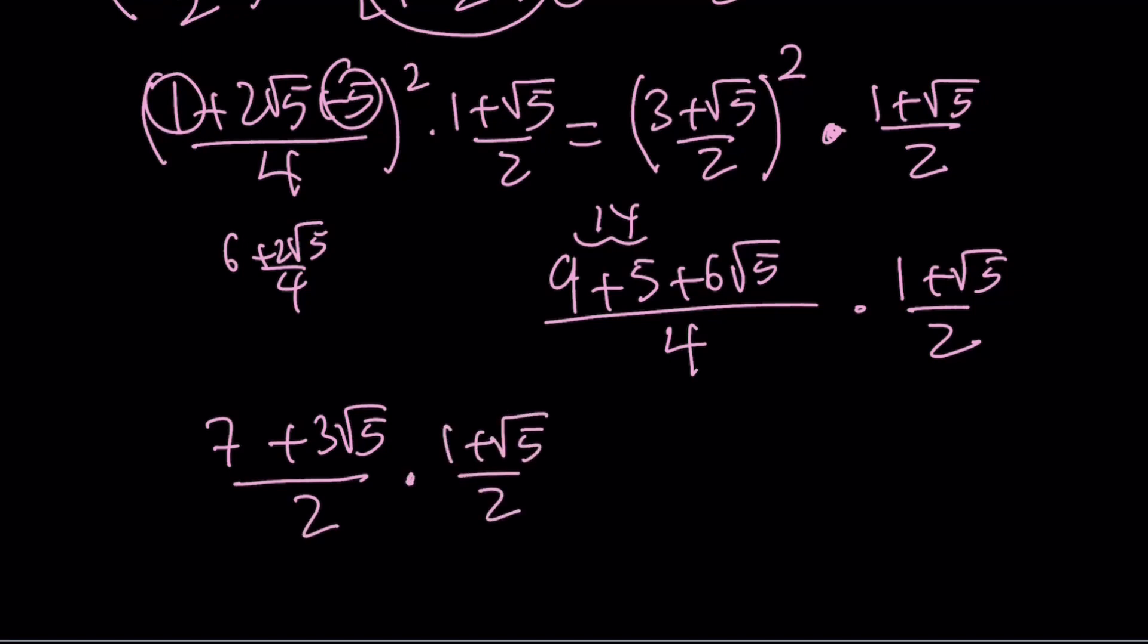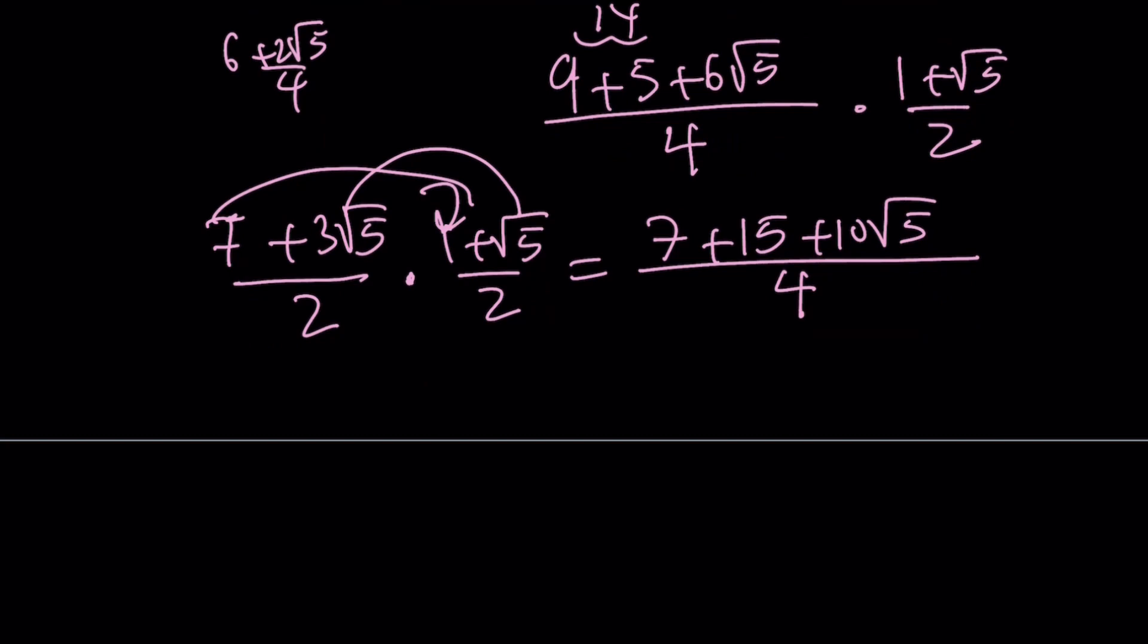So this should be the 5th power of what I'm looking for. Let's go ahead and distribute this. 7 times 1 is 7. 3 root 5 times root 5 is 3 times 5, which is 15. And then I get 7 root 5 and 3 root 5, which gives me 10 root 5. So you can go ahead and distribute. And from here, we get 22 plus 10 root 5 divided by 4 as our 5th power. Remember, this is just the 5th power. And I can simplify this as 11 plus 5 root 5 over 2.